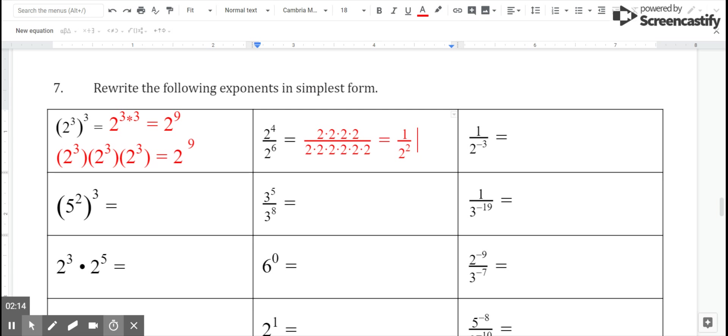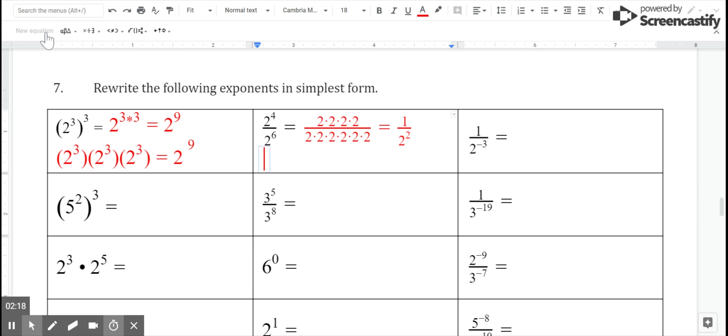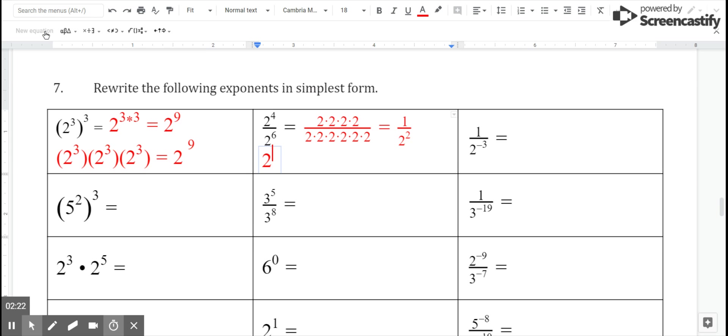That's one way to solve this. If I wanted to use the rules for dividing exponents, I could have just said, hey, I'm dividing two exponents with the same base. That means I'm taking two to the four minus six power, which is two to the negative two power.